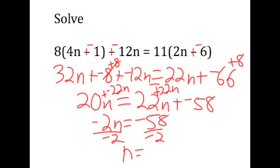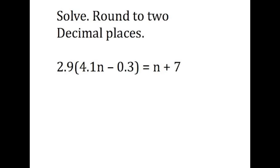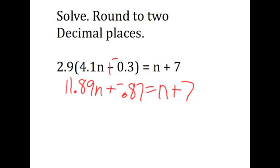Bringing us to the second problem that involved decimals that we were required to round off. My calculator said that 2.9 times 4.1n is 11.89n, and 2.9 times negative 0.3 is negative 0.87. Recopy the left side. I am going to add 0.87 to both sides, and I'm also going to subtract n from both sides, or the way I wrote it was add negative n.